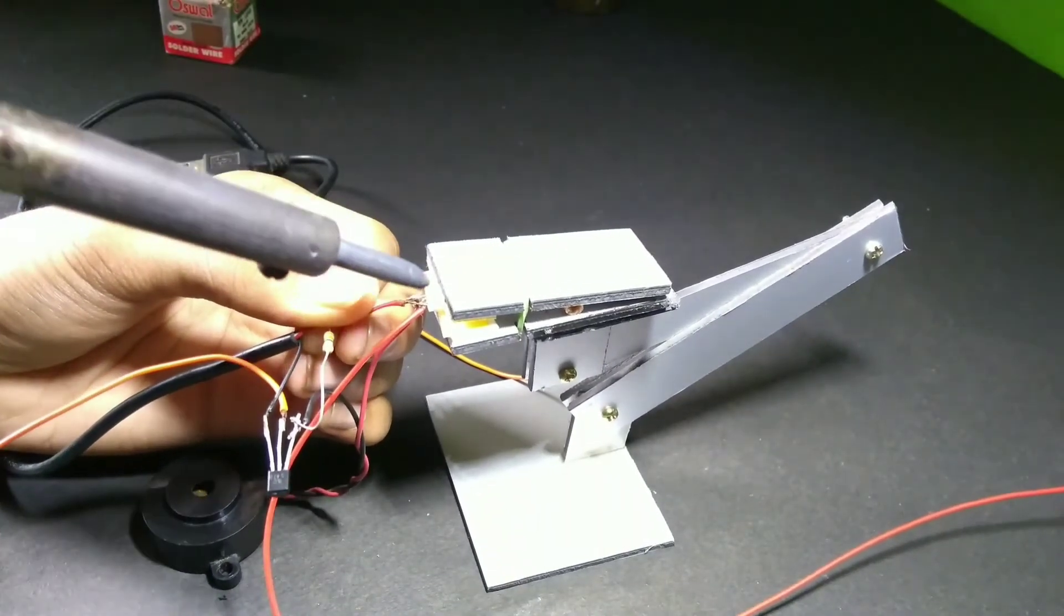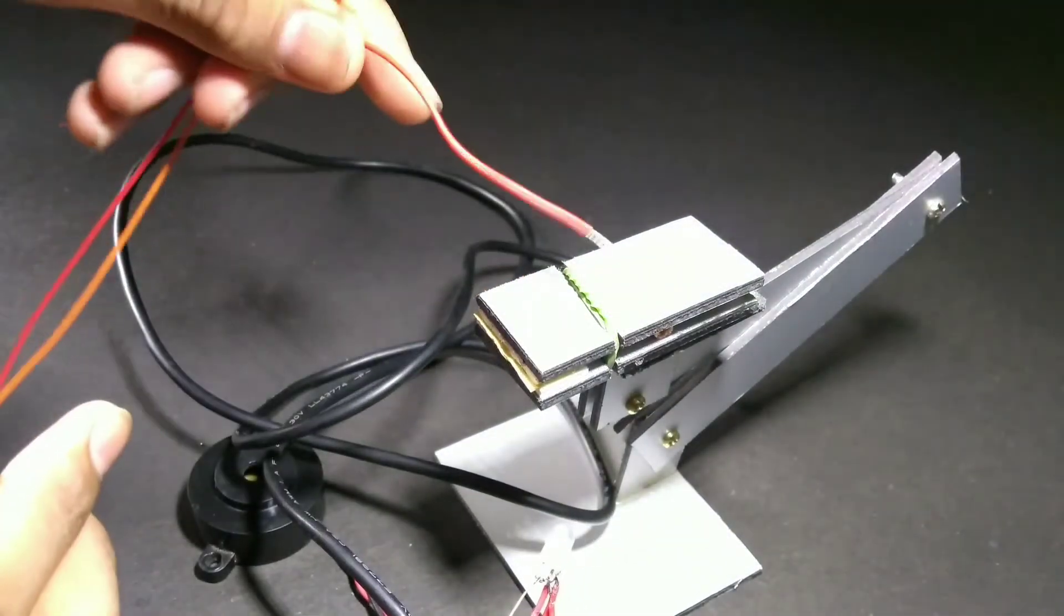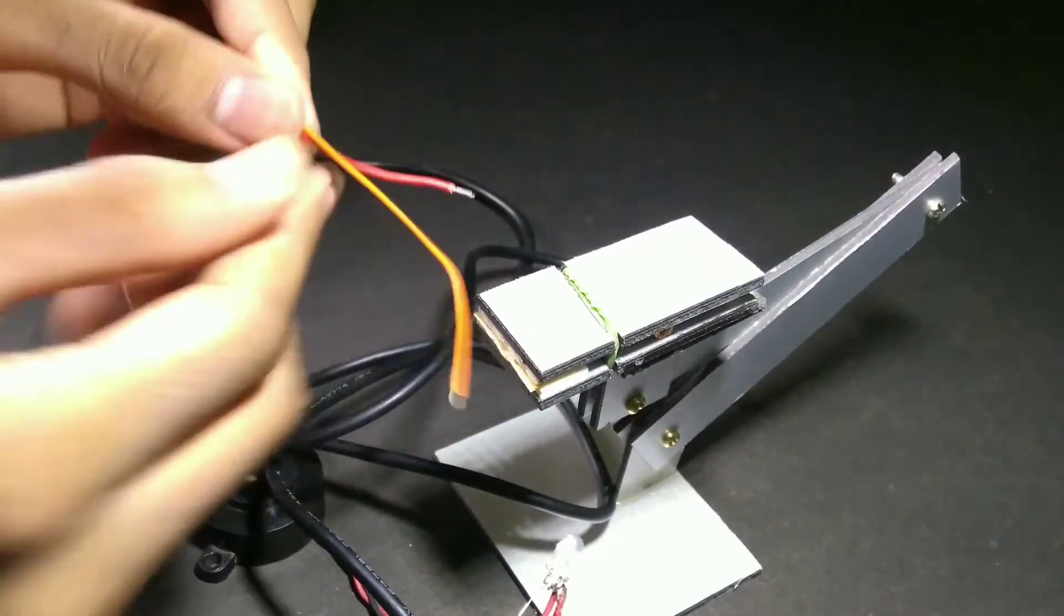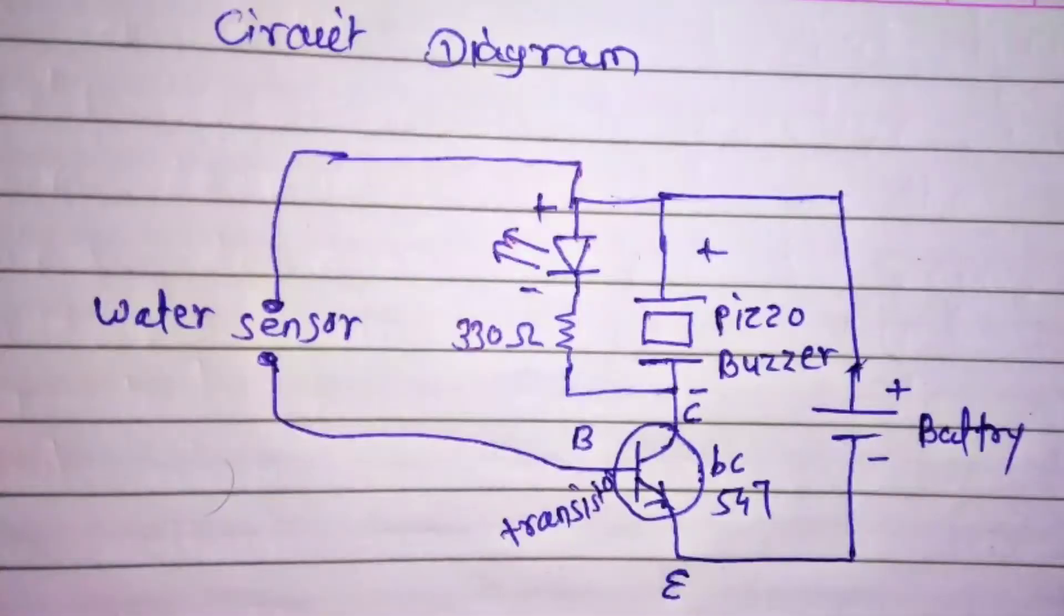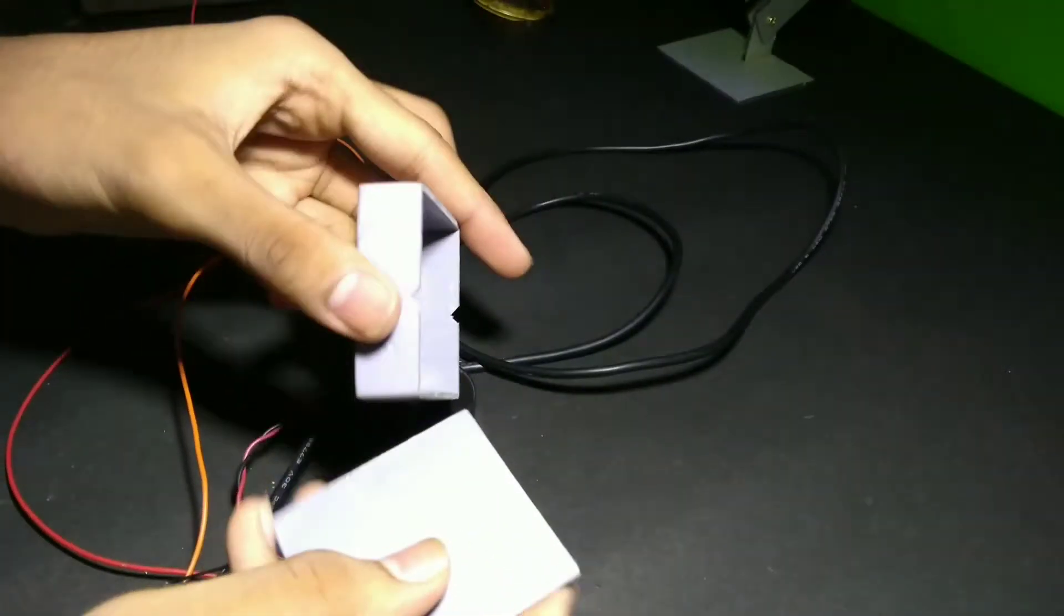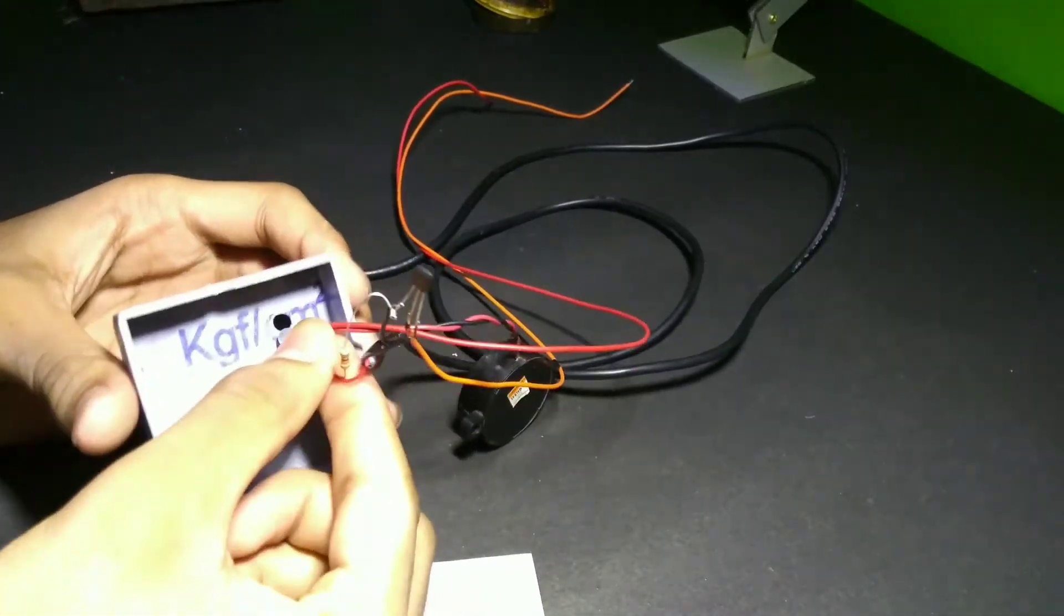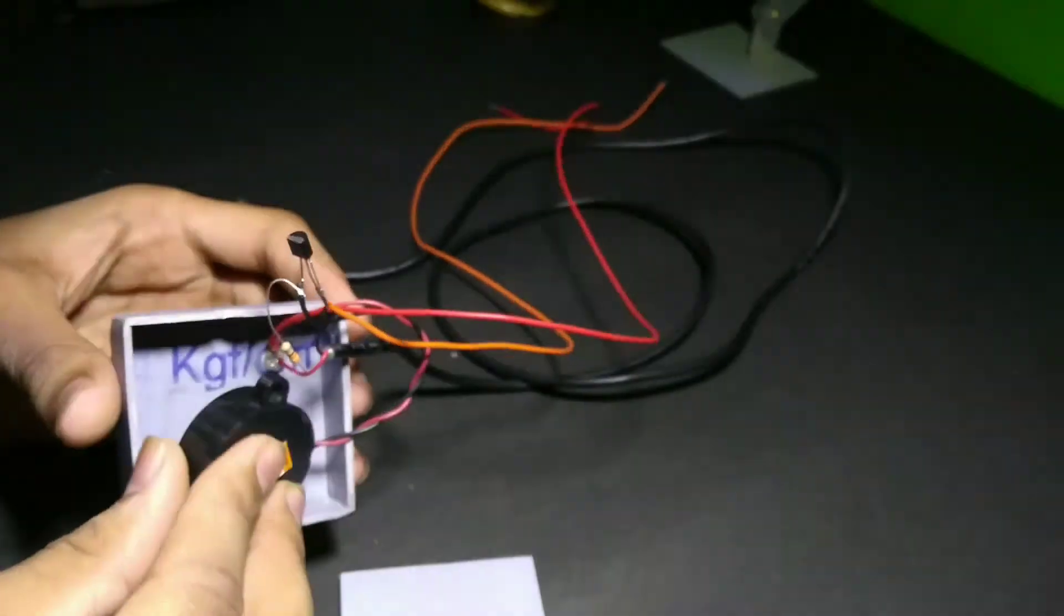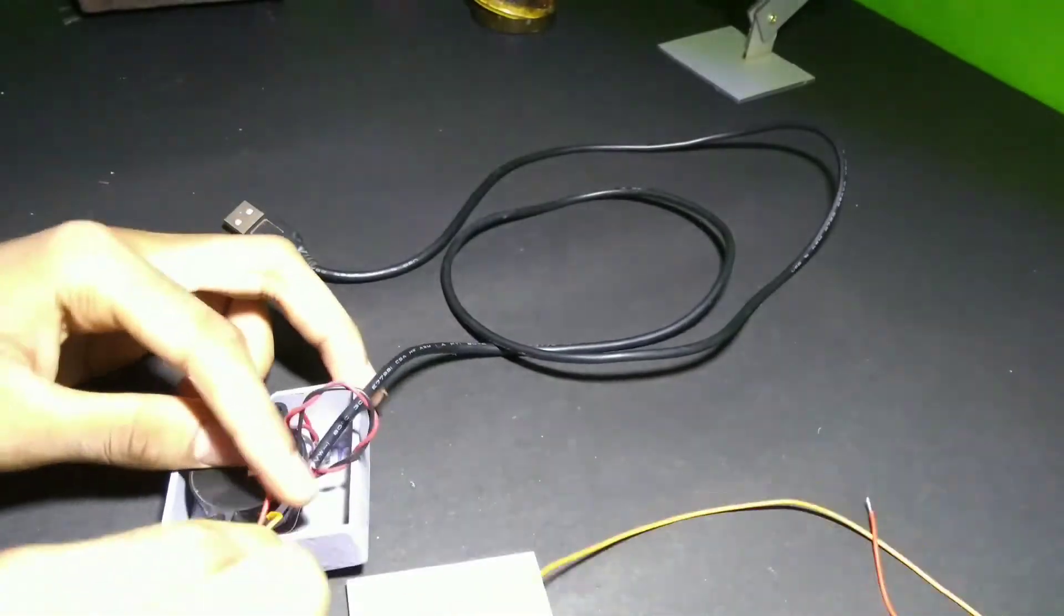After this, the power cord connects to our mobile charger and these two wires are the water sensing wires. After completing it, I take this type of plastic box - you can use any plastic box. Then I fix everything into this box in this way. After doing this, our water tank overflow alarm is ready.